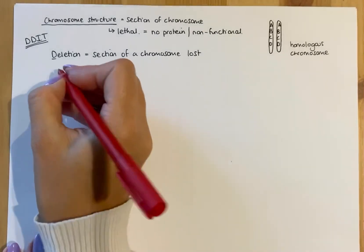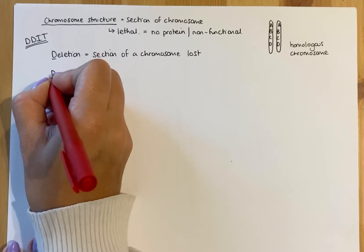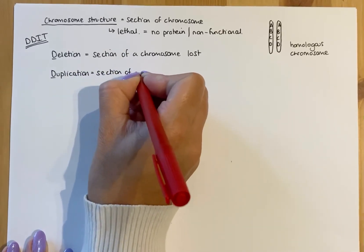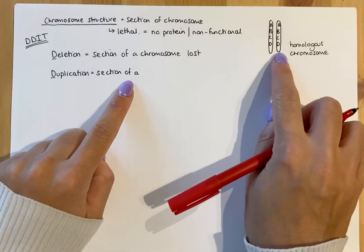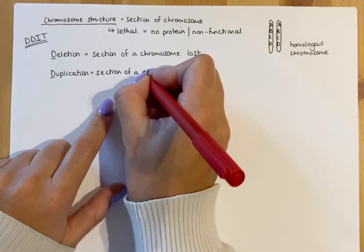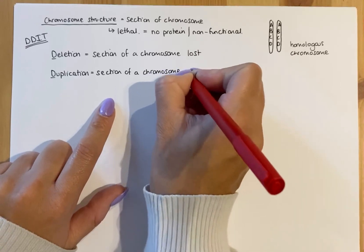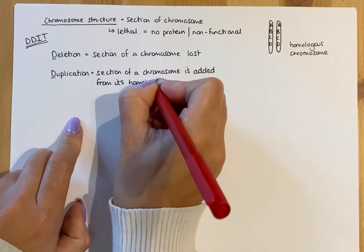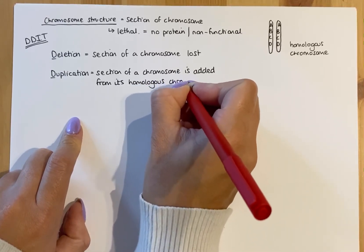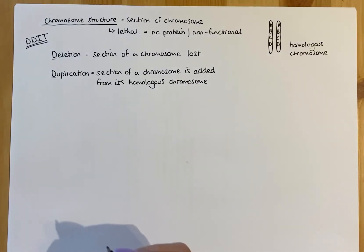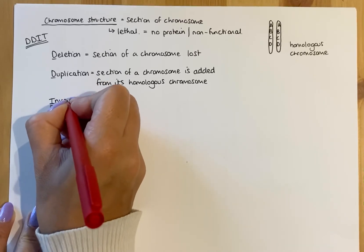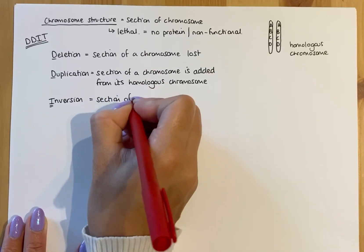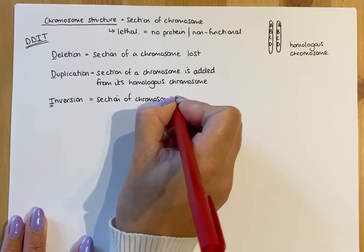The next mutation in DDIT is duplication — again referring to sections of a chromosome. Here, a section of a chromosome is gained from its homologous partner chromosome. The I in DDIT stands for inversion, where a section of a chromosome is reversed or flipped around.